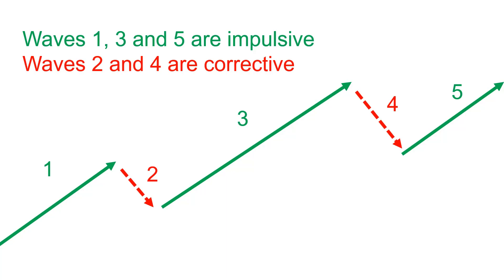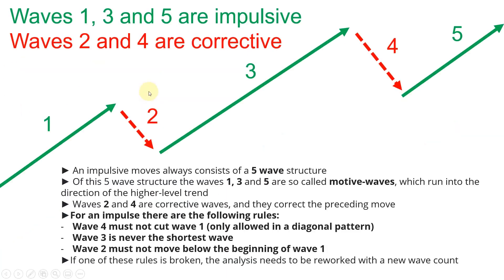This whole move — one, two, three, four, five — is basically a five wave structure. This is generally an impulsive pattern, an impulsive structure which moves into the trend direction. This has certain rules. If you do technical analysis on such a pattern, there are certain rules that we need to adhere to. If one of these rules is broken, you have to redo your wave count.